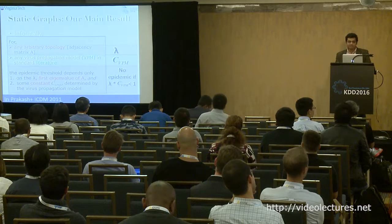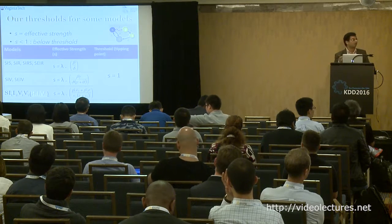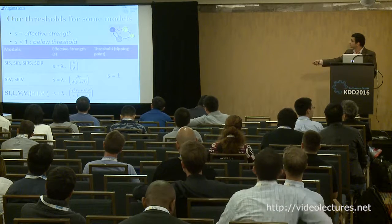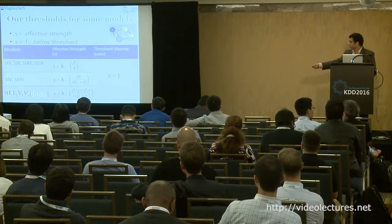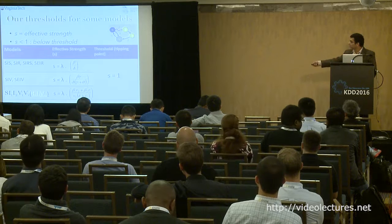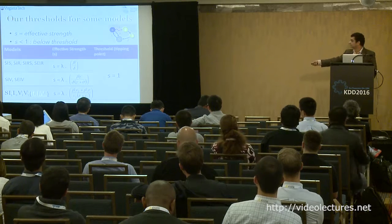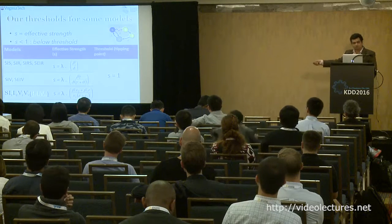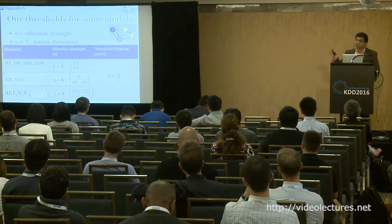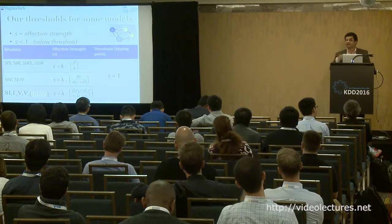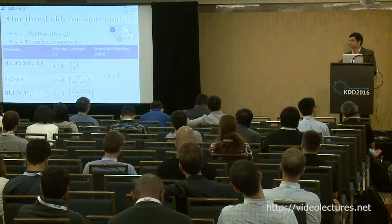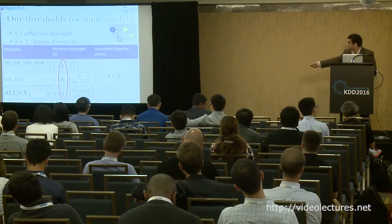To instantiate this result: you can call the product lambda times constant as effective strength S. If S is less than one, it's below threshold. For SIS, SIR, SIRS, the effective strength is lambda times beta over delta — with the attack rate beta and curing rate delta as the key parameters. More complex models like SIV or HIV with terminal and non-terminal states have more complicated expressions, but in all cases, if that product is less than one, there won't be an epidemic.